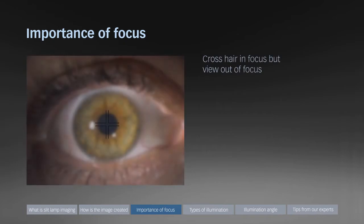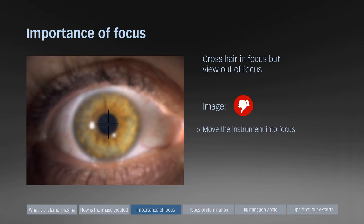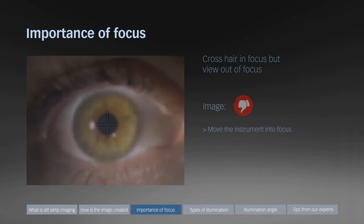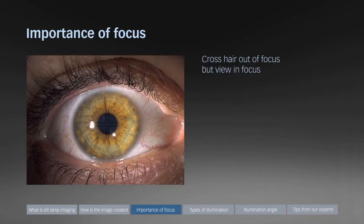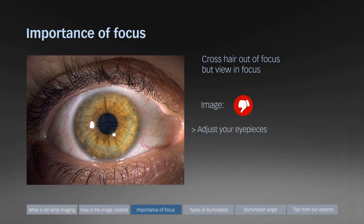If by looking through the eyepieces the crosshair is in focus but the view is out of focus, you need to move the slit lamp into focus. If by looking through the eyepieces the crosshair is out of focus but the view is in focus, you need to adjust your eyepieces.